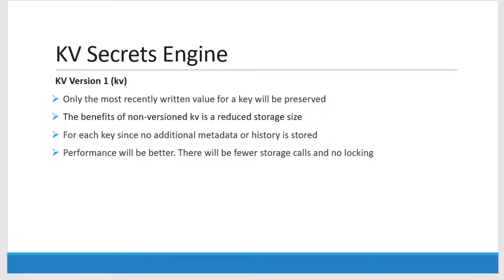Within the key-value secret engine I have two versions: version 1 and version 2. The major difference is that version 2 can manage versions of any value that I add. Whenever I delete a value it will not actually be deleted — it will just get marked as deleted — and because of that, the size it consumes will be higher. In version 1, only the most recent value will be stored and there will be no history maintained. Since it does not maintain any history or metadata, the size it occupies on disk will be less.